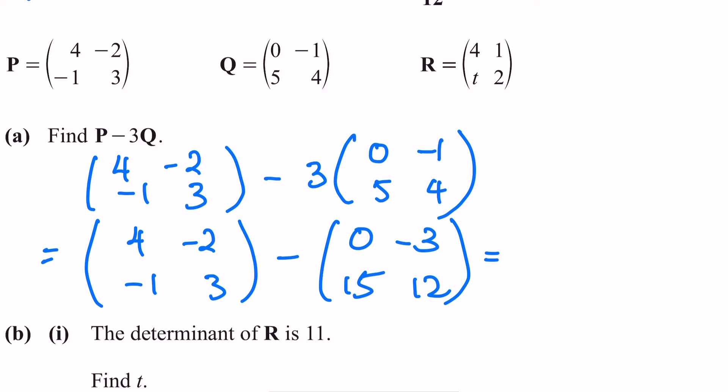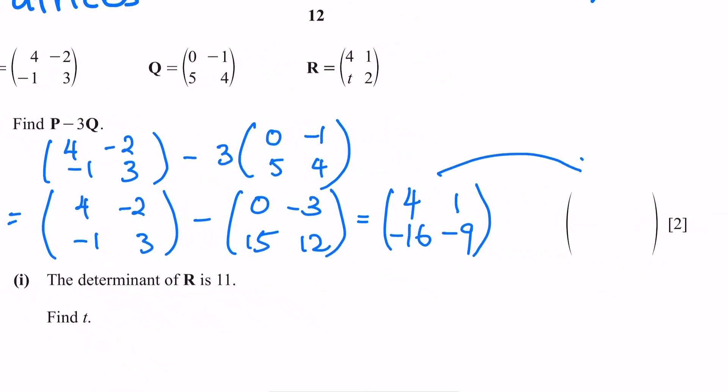Now you are going to solve it one by one according to their position. Start with the top left: 4 minus 0 will give you 4. Next, -2 minus -3 will give you positive 1. Bottom left, -1 minus 15 will give you -16. Lastly, 3 minus 12 will give you -9. Fill in the answer with the space given here. That's all.